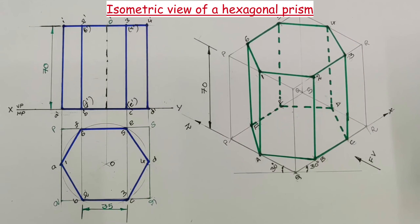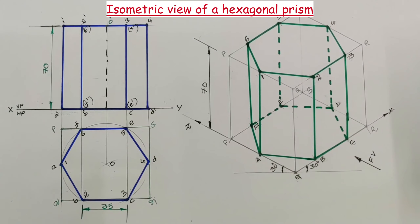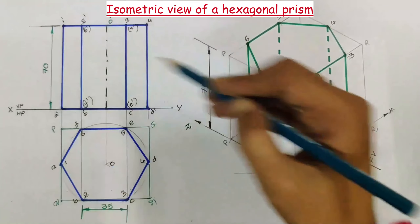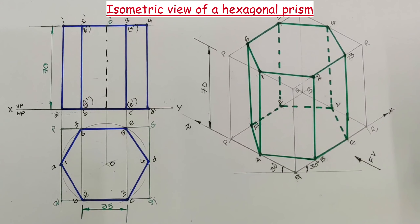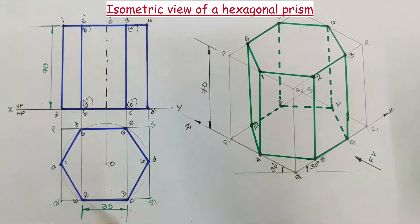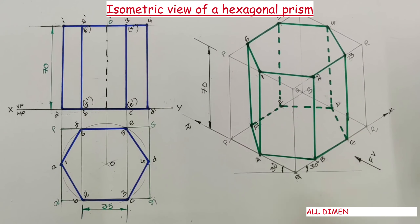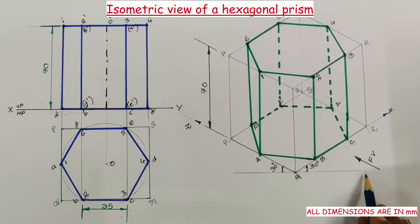Now the pencil uses: the top view, front view, and isometric view of the hexagonal prism are drawn with an H pencil. Dimensioning is done with a 2H pencil, and construction lines are with a 3H pencil. The base side length is 35 mm and the axis height is 70 mm — all dimensions are in millimeters. In isometric views, lines parallel to the horizontal plane — length and breadth lines — are drawn at 30 degrees to the reference line.